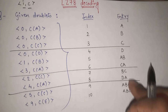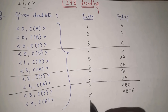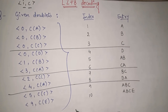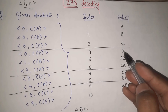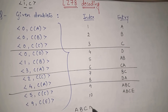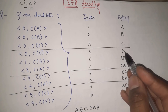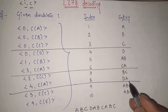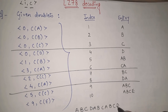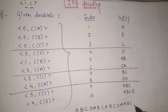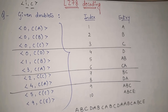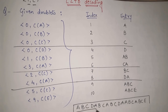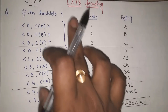Similarly here 9 with codeword E — in the 9th index I am having ABC, so ABC will be as it is and it will be appended with E. So this is my entry. What will be my ultimate answer — it will be the concatenation of all these strings: A, B, C, D, AB, CA, BC, DA, ABC, ABCE. So this is the whole message that we have got after decoding the given doublets with the help of LZ78 method.